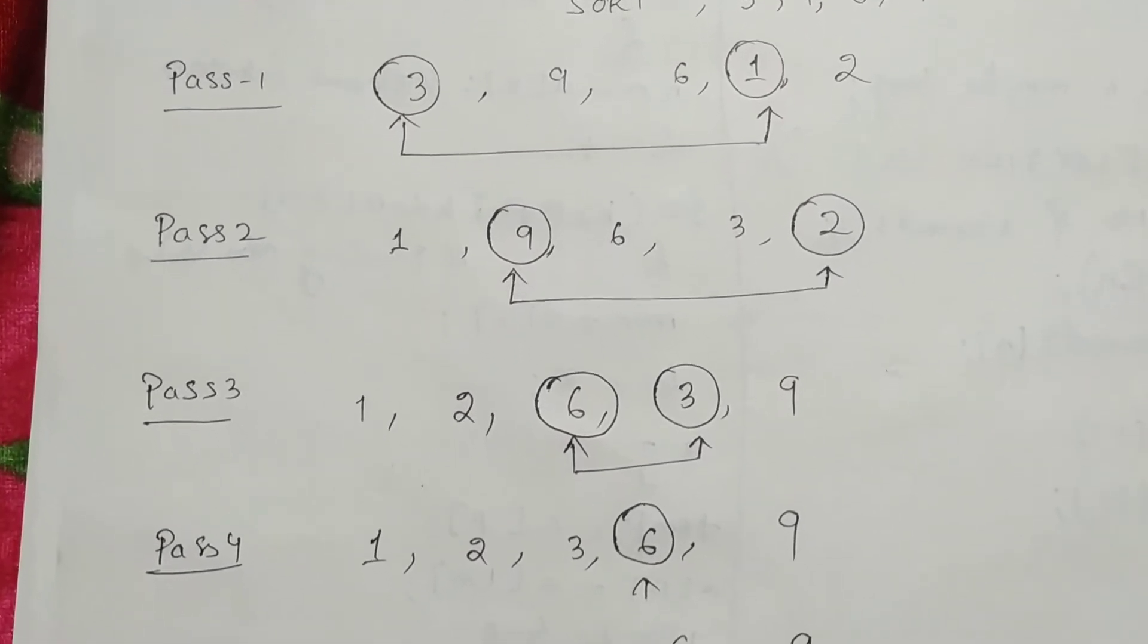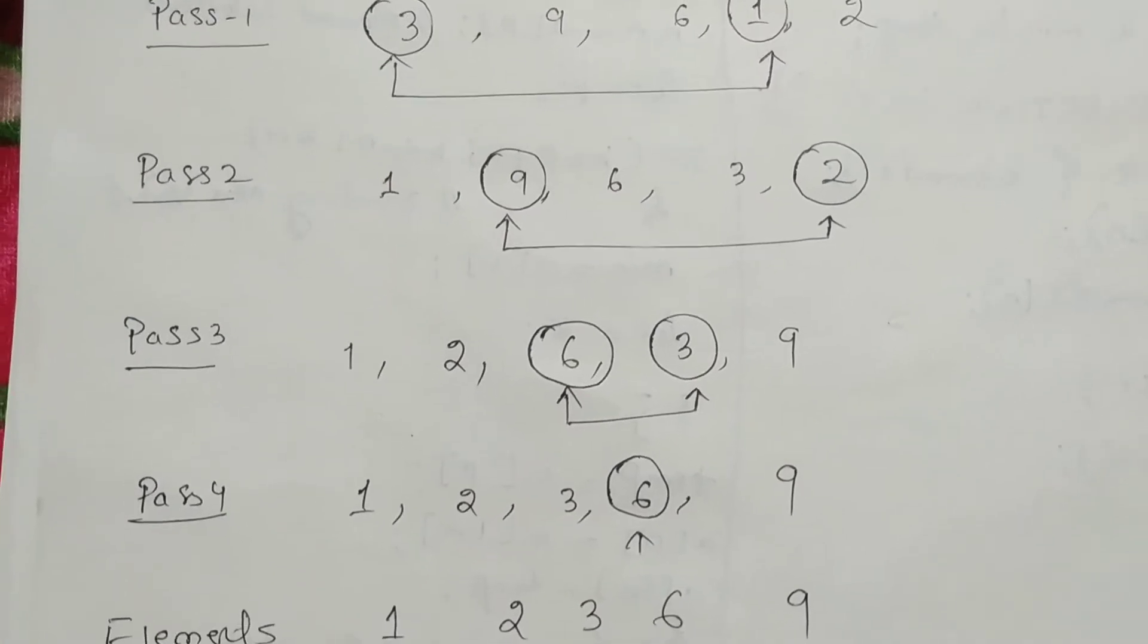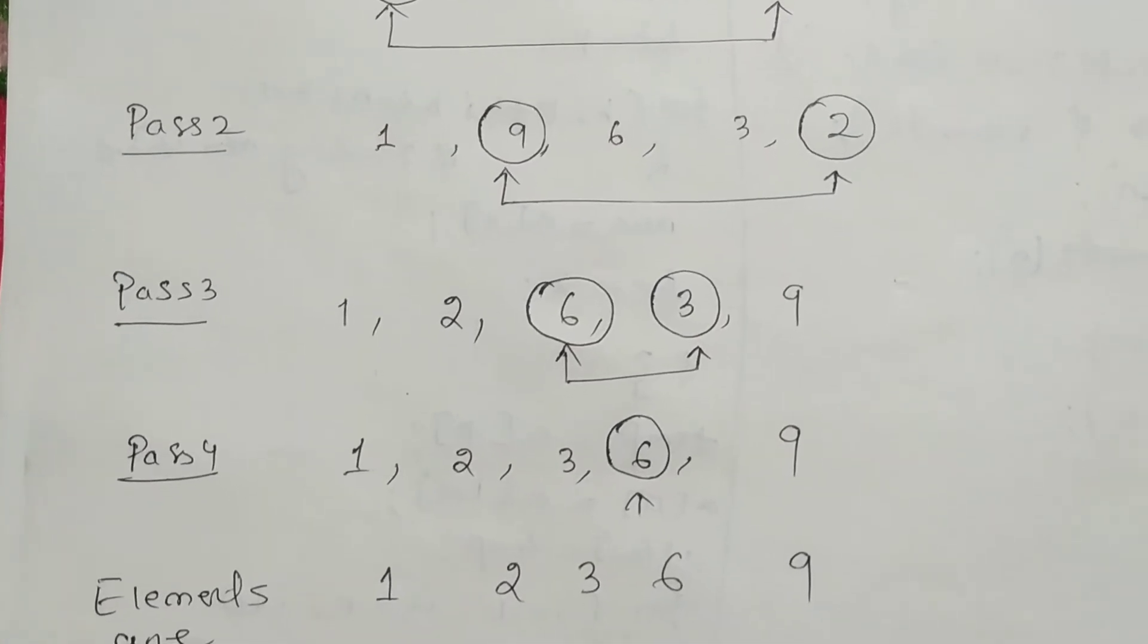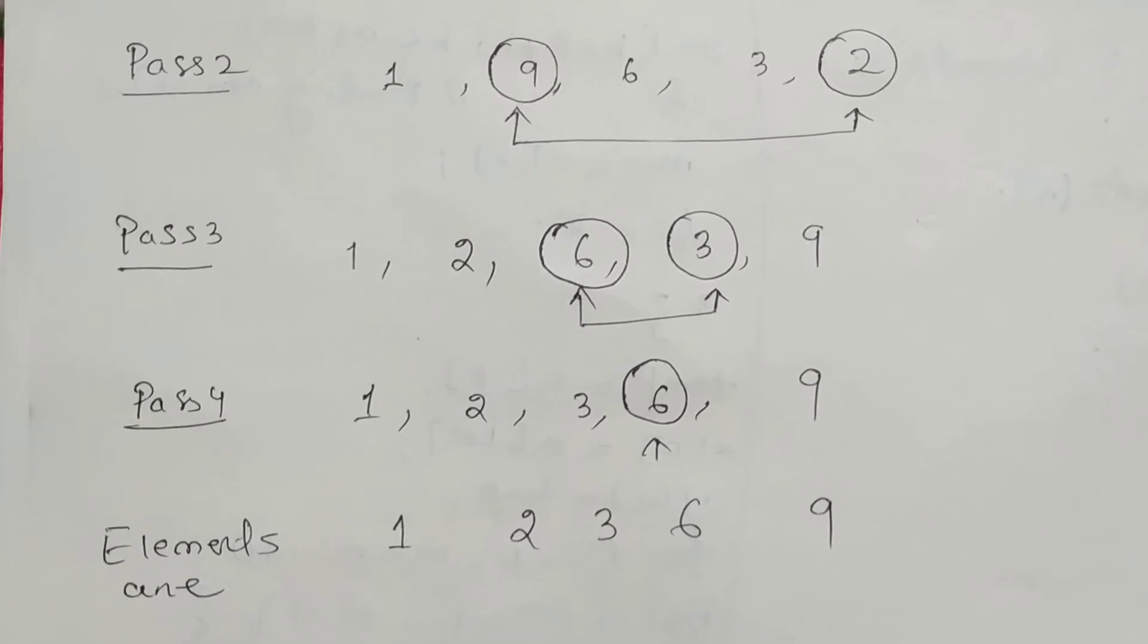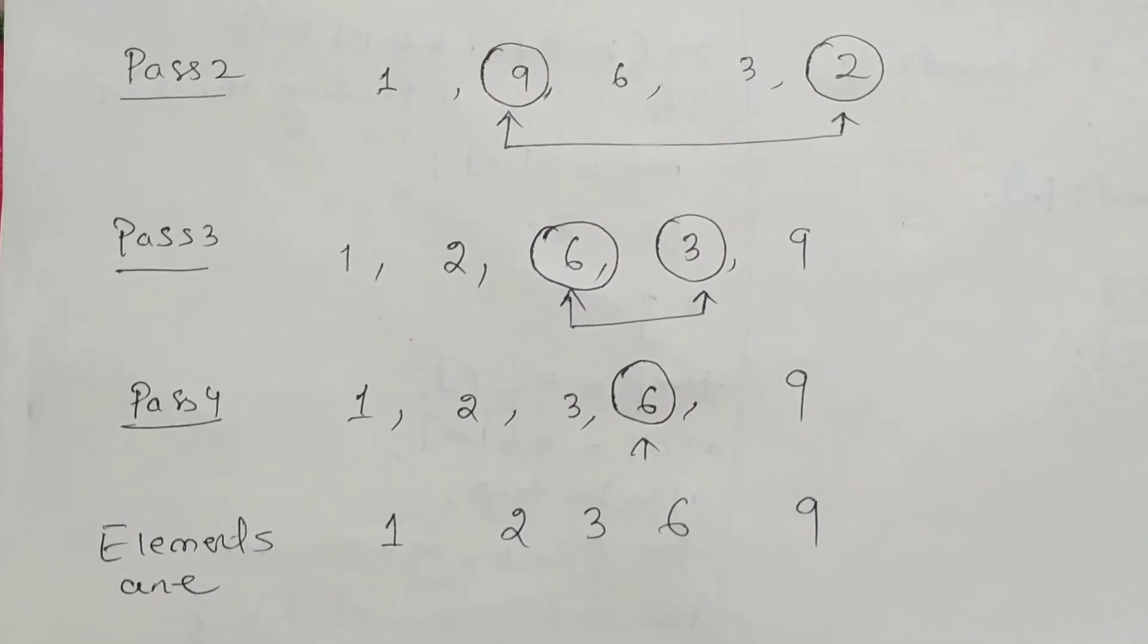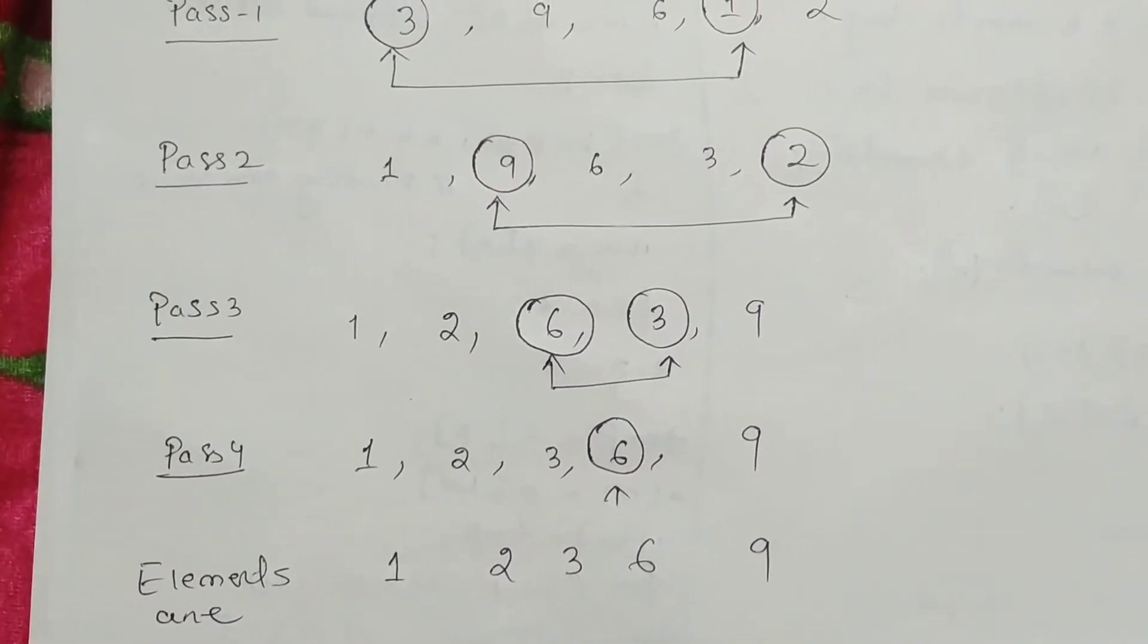Then which one is the next lowest element? That is 3. So 3 comes to its proper position. Now 6 is already present at its proper position, so no need to swap. So now you can see the elements are sorted.